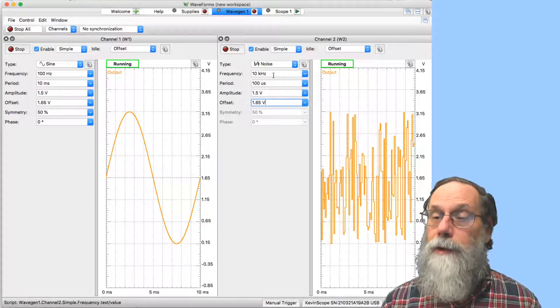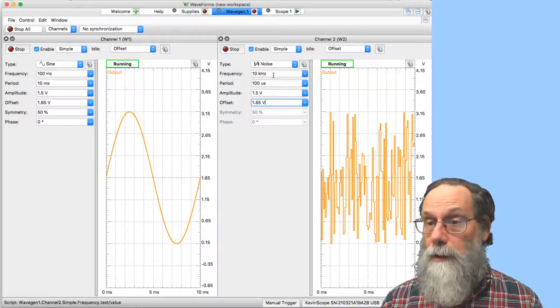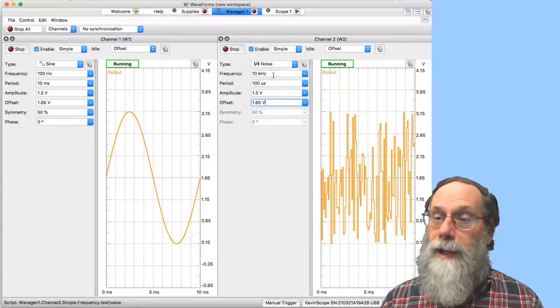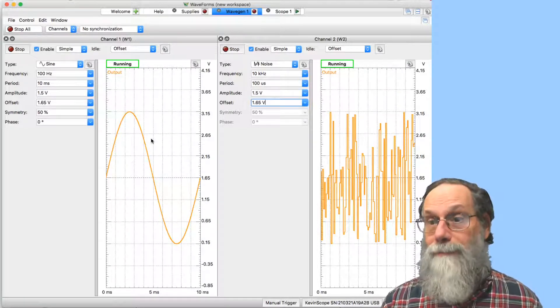That means I will be changing the voltage value on the noise signal 100 times in each cycle of the sine wave, and so it'll really be noise.